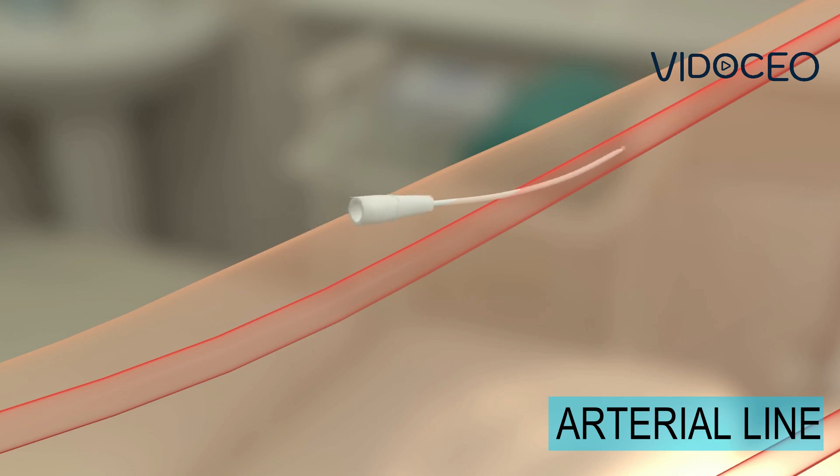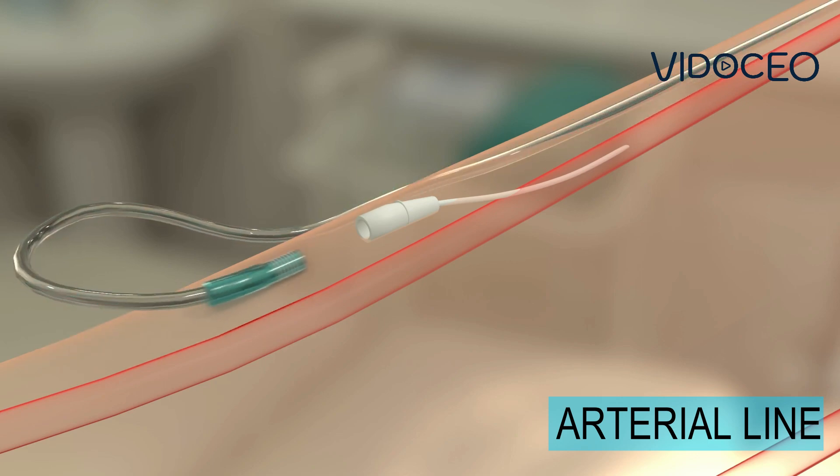The catheter is then slid through the lumen of the artery until the end of the catheter is flush to the skin. The arterial line might be stitched in place.